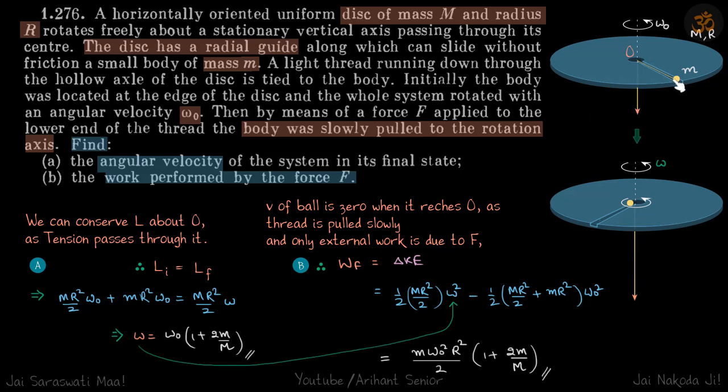So that's why about the axis the angular momentum does not change. So L initial equals L final. Initial angular momentum is I of disc into omega naught plus I of ball into omega naught. Final: I of disc into omega. So we get the value of omega. First part done.